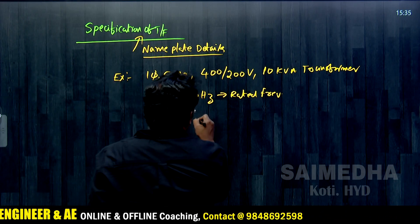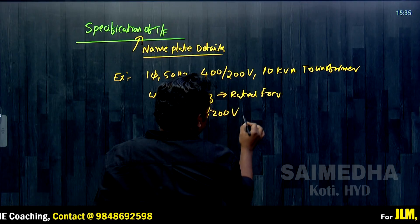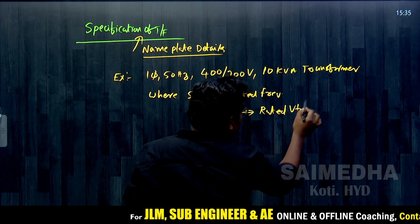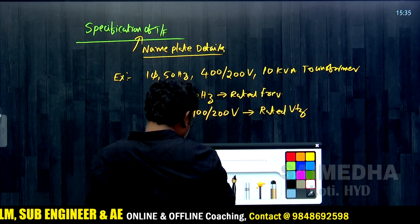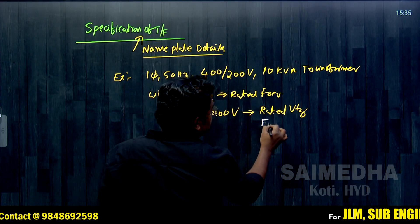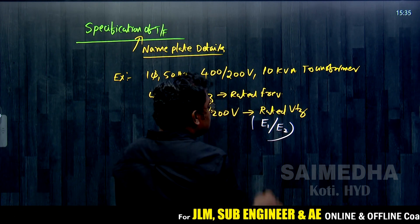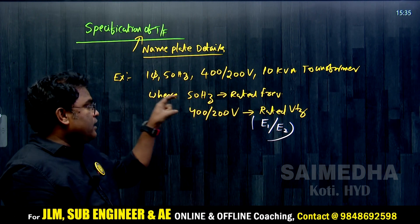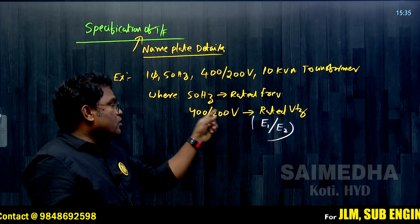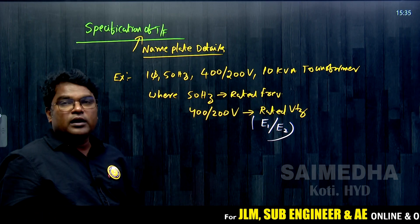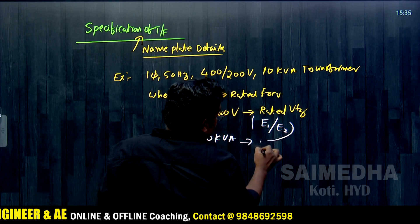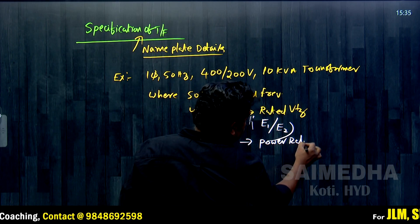Next, the 400/200 volts indicates the rated voltage of the transformer. The 400 V is the primary induced EMF (E1), and 200 V is the EMF induced in the secondary winding (E2). The 10 kVA represents the power rating of the transformer.